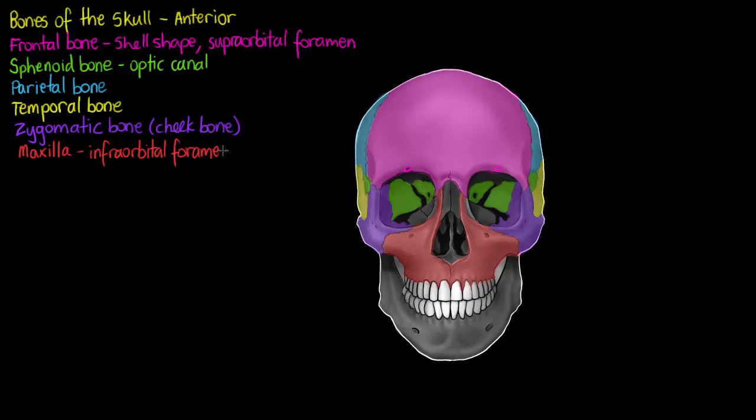Now with our maxilla, we have the infraorbital foramen that I'm highlighting now, once again so nerves or blood vessels can pass through.